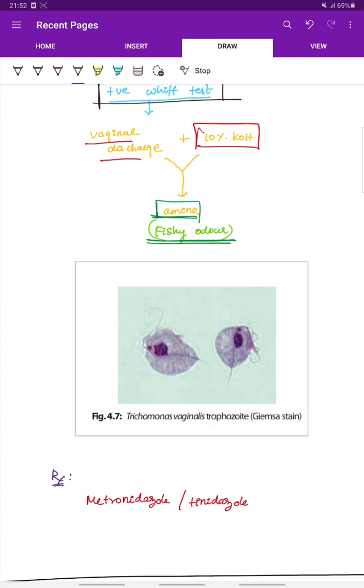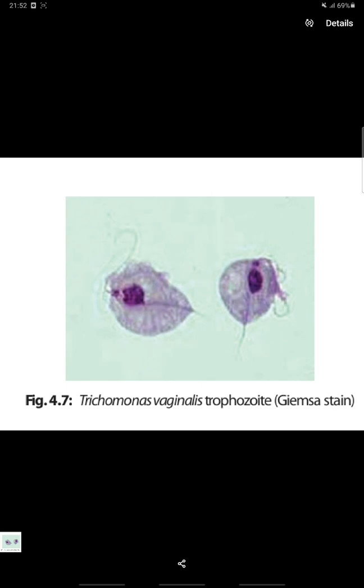This is the image showing Trichomonas vaginalis trophozoid under Giemsa stain.